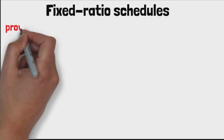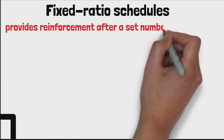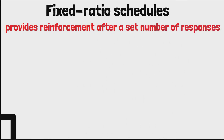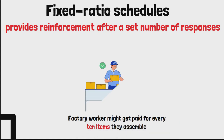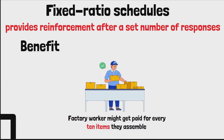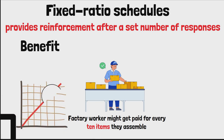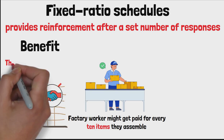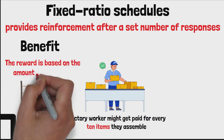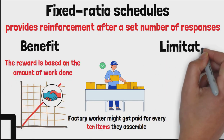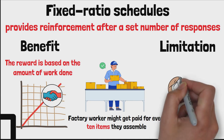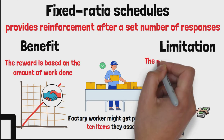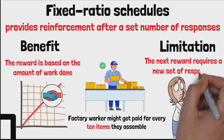A fixed ratio schedule provides reinforcement after a set number of responses. For instance, a factory worker might get paid for every 10 items they assemble. The benefit of a fixed ratio schedule is that it encourages high rates of response since the reward is based on the amount of work done. The limitation is that there may be a drop in motivation immediately after the reward is given, as the next reward requires a new set of responses.